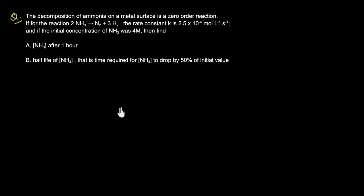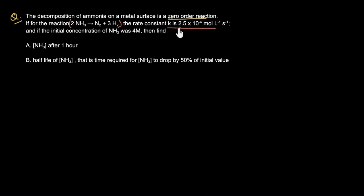Let us now try and solve a numerical. The decomposition of ammonia on a metal surface is a zero-order reaction. For the reaction 2NH₃ → N₂ + 3H₂, the rate constant k is 2.5 × 10⁻⁴ mol per liter per second, and the initial concentration of ammonia was 4 molar.